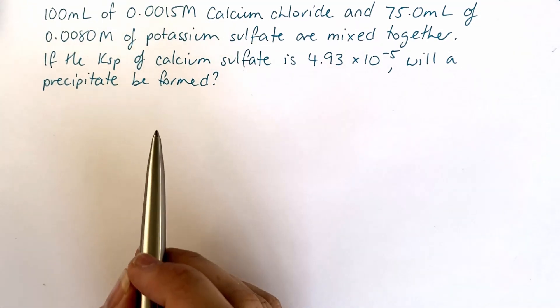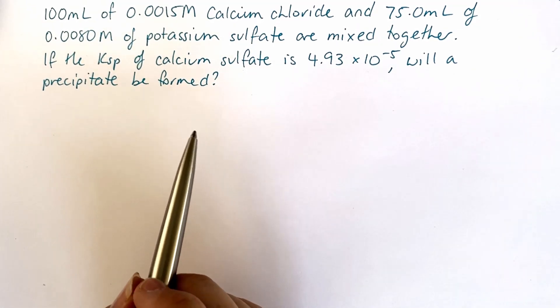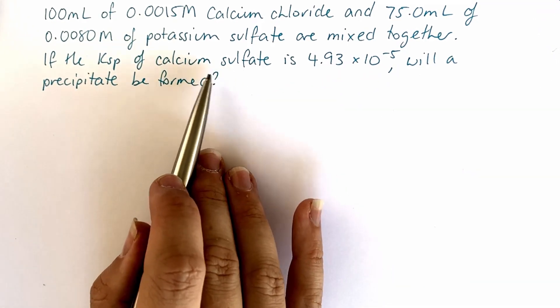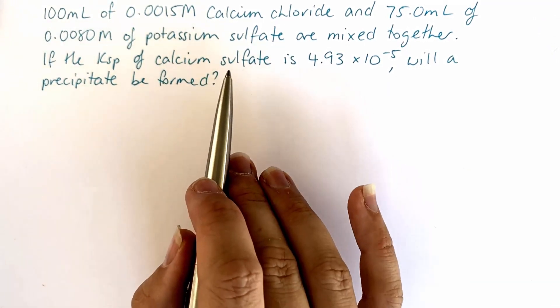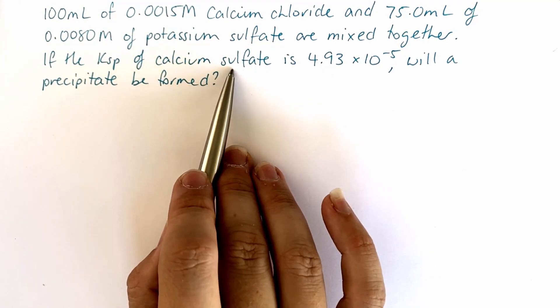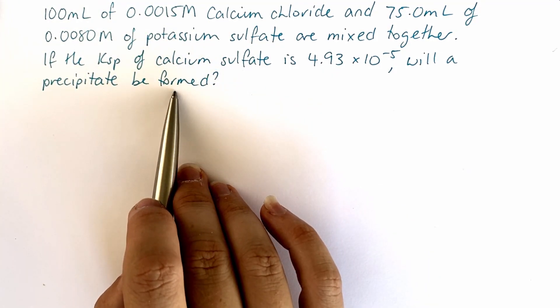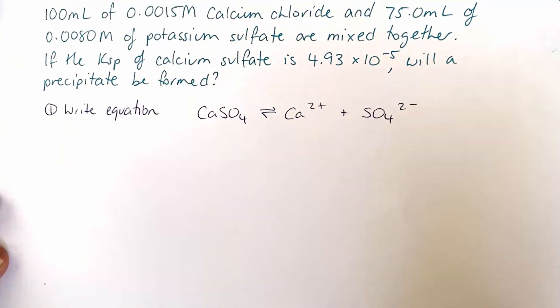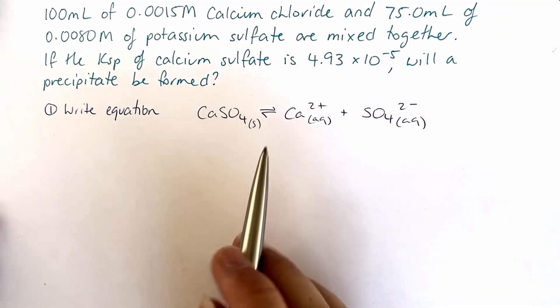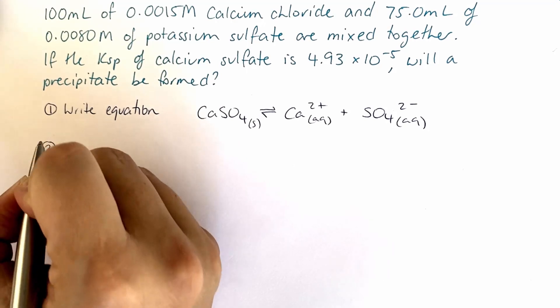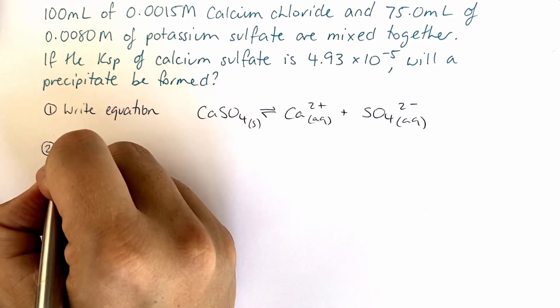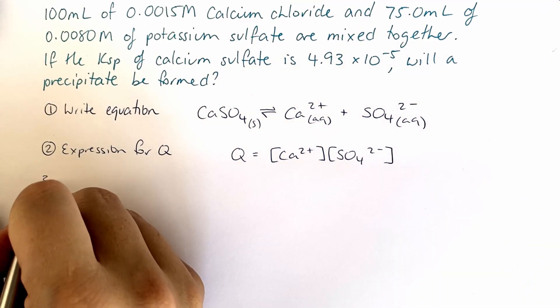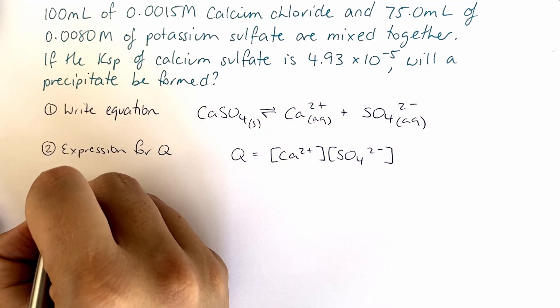We actually don't even need to do that for this because we've already been told what the precipitate is going to be. The precipitate is calcium sulfate, so we can go straight into writing a half equation for that. After we've done that, step number two would be to write our expression for Q. Now step number three is to determine the concentration of each of our species in our expression.